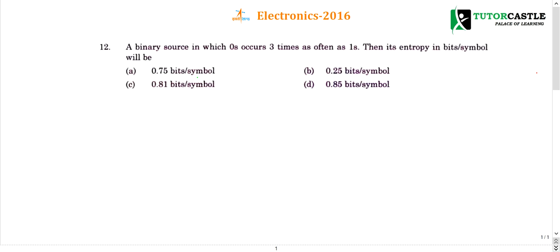Question number 12. A binary source in which 0 occurs three times as often as 1. Then its entropy in bits per symbol will be?